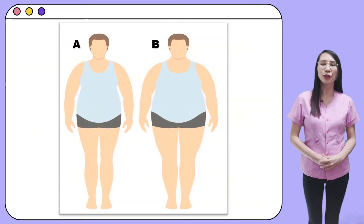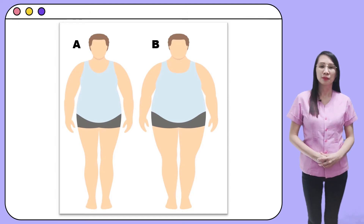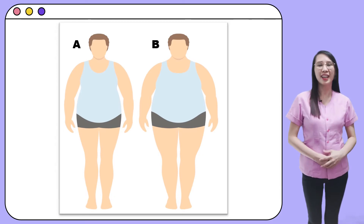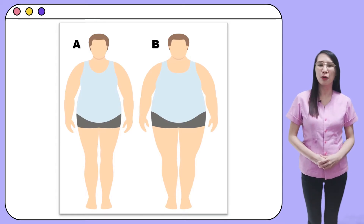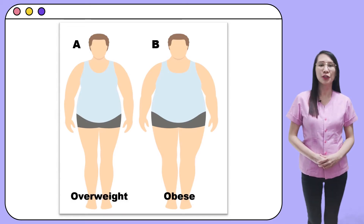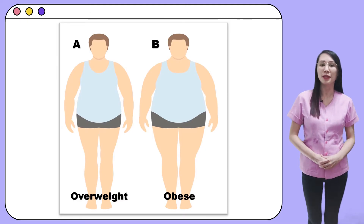Now, I want you to look closely at this picture. What do you notice from the two persons in the picture? You might notice that they both have big body shapes, but person B is much bigger than person A. This is because person A is overweight, while person B is obese.